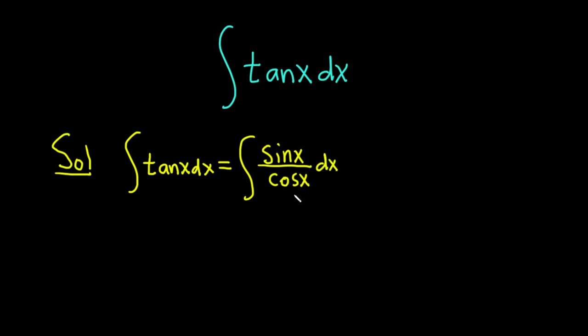Now we're going to make a u substitution. We're going to let u be the bottom piece. We're going to set u equal to the cosine of x. And then now we can take the derivative. So du is equal to negative sine x dx. That's because the derivative of cosine is negative sine.